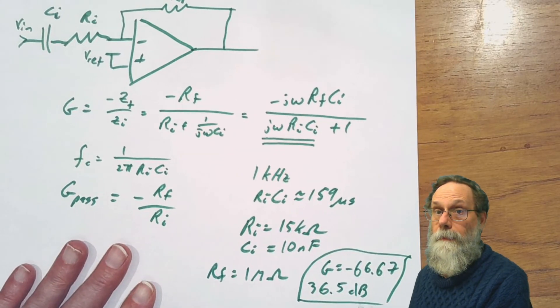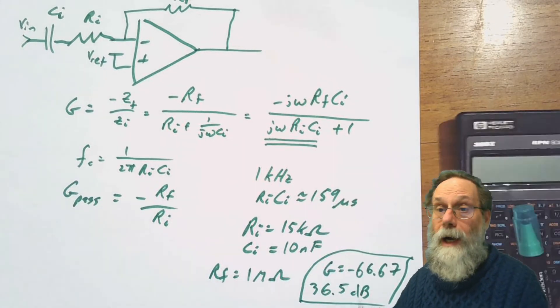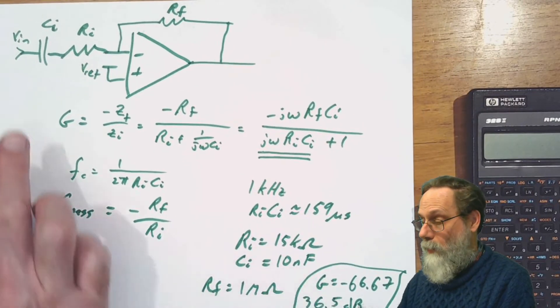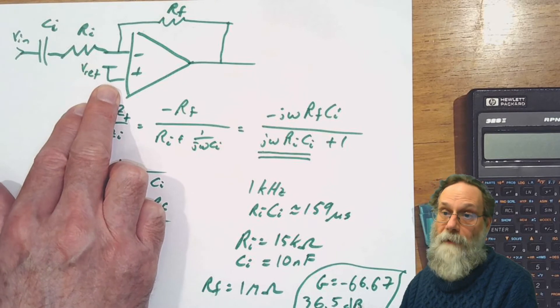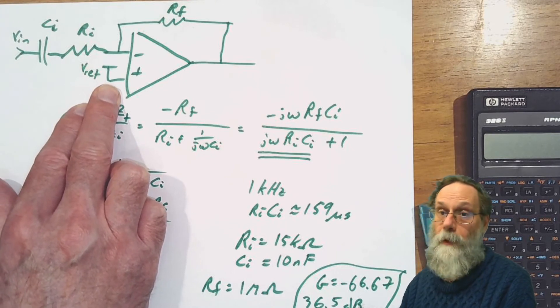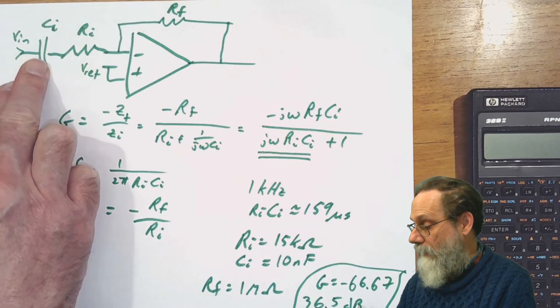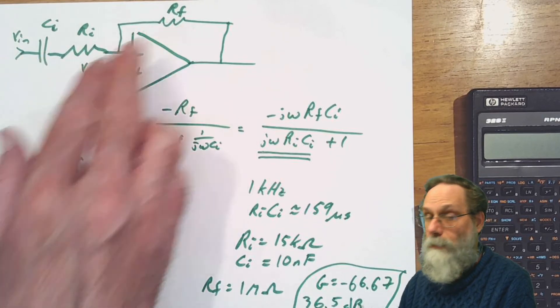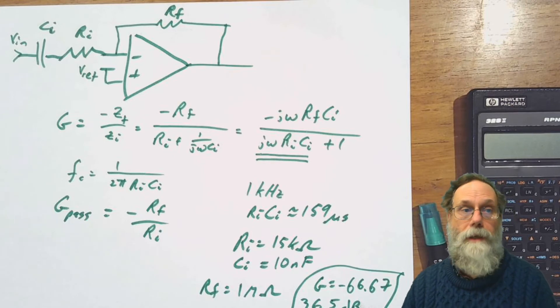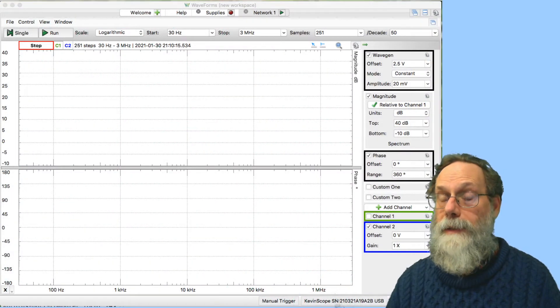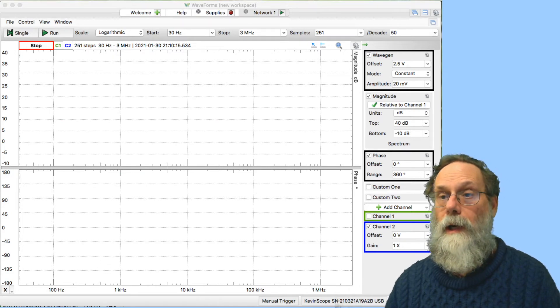I actually built this circuit with VREF being set to half my power supply voltage. I had a 5-volt power supply, so I was setting it to 2.5 volts. I had 10 nanofarads, 15 kiloohms, and 1 megaohm. Now I'm going to go over to waveforms and test this active filter.